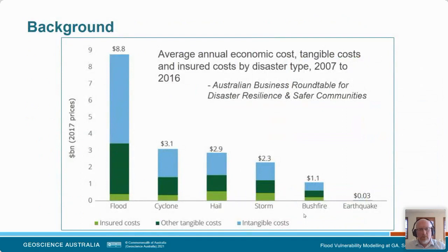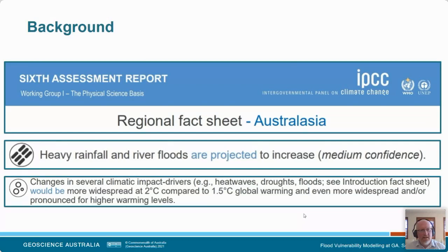Looking at background to the research — why we're interested in flood vulnerability and being able to mitigate or reduce it. A couple of years ago, the Australian Business Roundtable for Disaster Resilience and Safer Communities released a report, and you can see that in the decade from 2007 to 2016, flood clearly had the largest annual economic cost to the community. The IPCC recently released their sixth assessment report, and if we just take a couple of excerpts from the Australasia regional fact sheet, we can see that heavy rainfall and river floods are projected to increase, based on 1.5 degree global warming. If it actually goes ahead higher than that, that increase is assumed to become even worse.